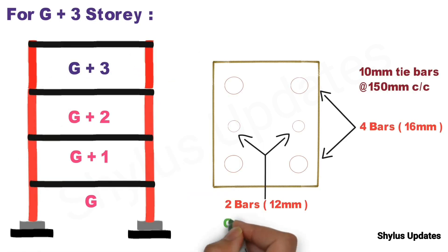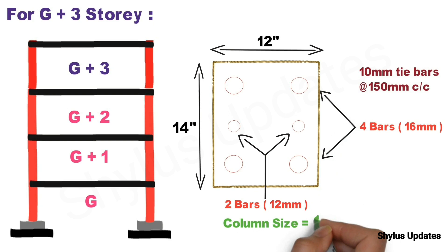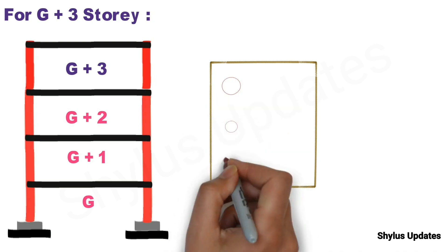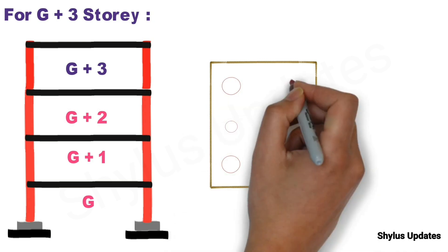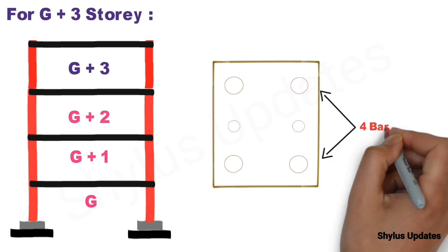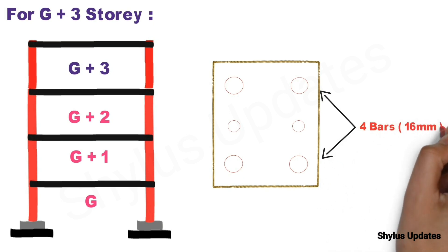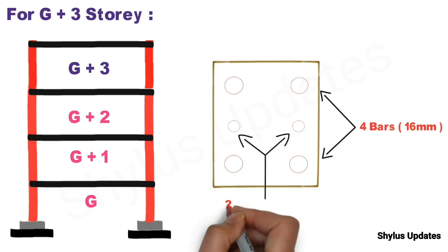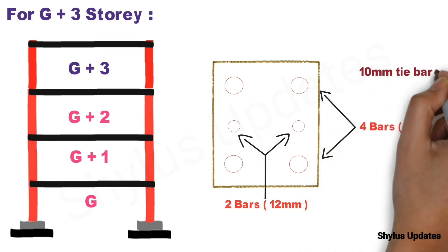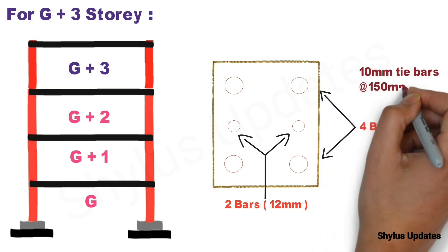For G plus 3 storey, the column size should be 12 inch into 14 inch or 0.3 meter into 0.35 meter. For this size of column we should provide minimum of 4 numbers of steel bars each 16 mm dia and 2 numbers of steel bars each 12 mm dia. And tie bars of size 10 mm spaced at 150 mm center to center distance spacing.